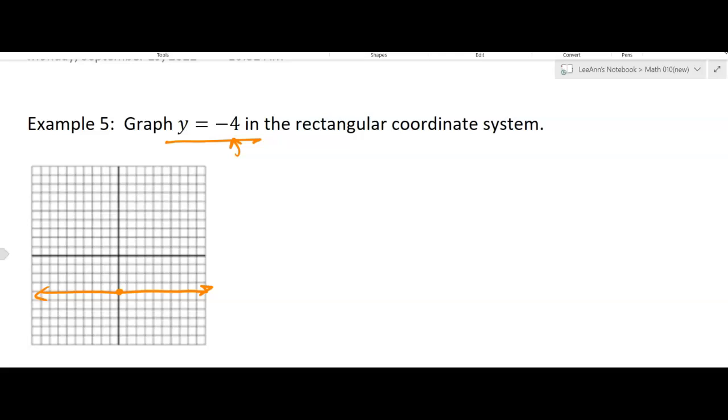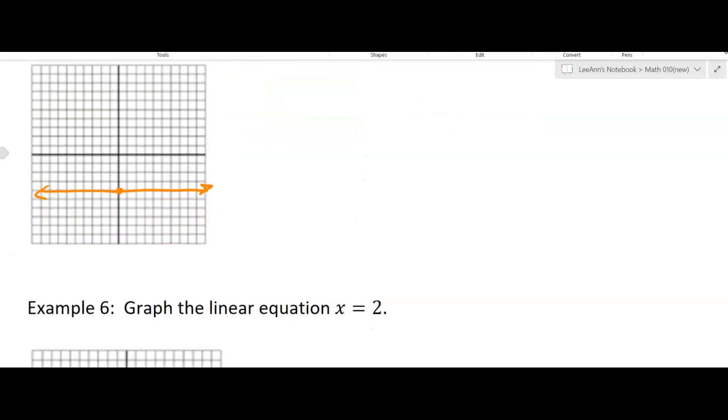Okay, you could remember it's the y-intercept being at negative 4, that might help. Or think about the table of values we talked about in the last video.